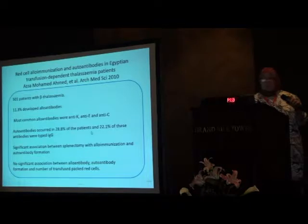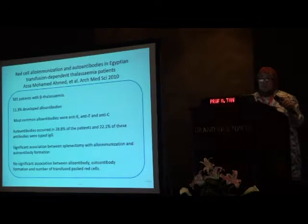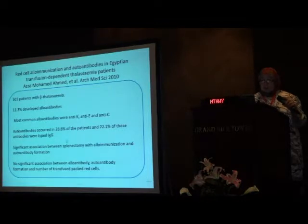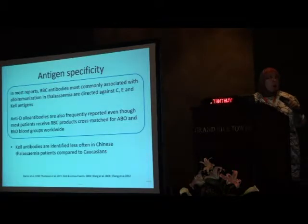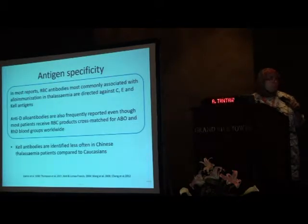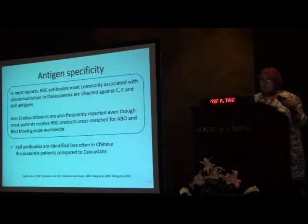A study done at the national research center described 11.3% alloantibodies — again anti-Kell, anti-E, and anti-C of the RH system. However, that study described auto-antibodies in 28.8%, which is a very high rate not typically seen in beta-thalassemia patients. So we have a minimum of 10% alloimmunization among our thalassemia population.